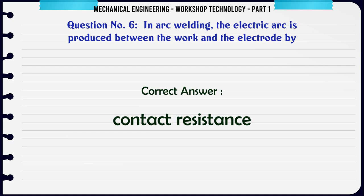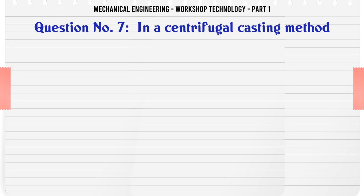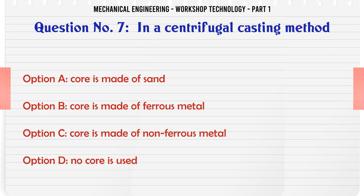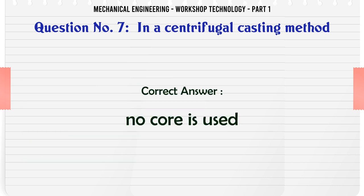In a centrifugal casting method: A. Core is made of sand. B. Core is made of ferrous metal. C. Core is made of non-ferrous metal. D. No core is used. The correct answer is: No core is used.